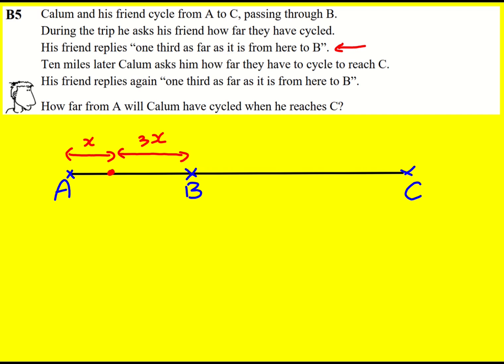Let's look at the second situation. So 10 miles later, well actually I can put that onto my diagram. This is going to be 10 miles. He asks how far they have to cycle to reach C. He replies again one-third as far as it is from here to B. So now I've got this to be one-third whatever this is which means I can say that this is y and this is 3y.